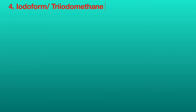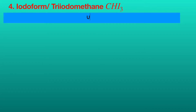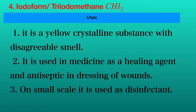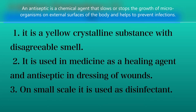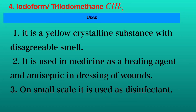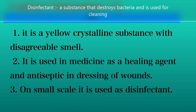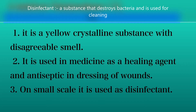The fourth compound is iodoform or triiodomethane, and its uses. First, it is a yellow crystalline substance with a disagreeable smell. Second, it is used as a medicine — as a healing agent and an antiseptic in the dressing of wounds. Third, on a small scale, it is used as a disinfectant.